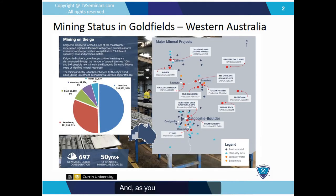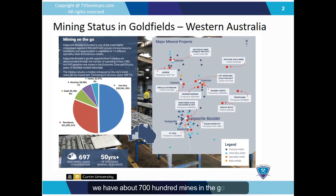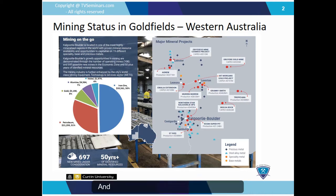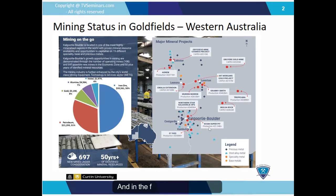As you can see in this slide, the mining status in the goldfield of Western Australia is given here. We have about 700 mines in the goldfield and more than 50 years of resources. About 50 percent is iron ore, 8 percent gold, 7 percent alumina, 4 percent nickel, and 30 percent petroleum. The figure shows the distribution of mining in the goldfield area.